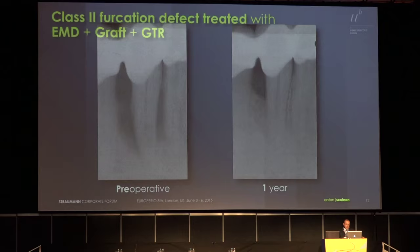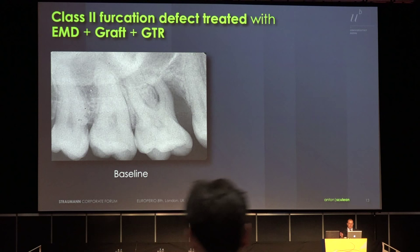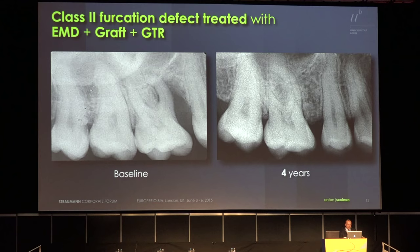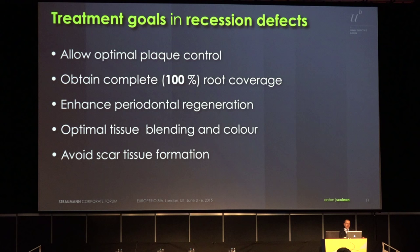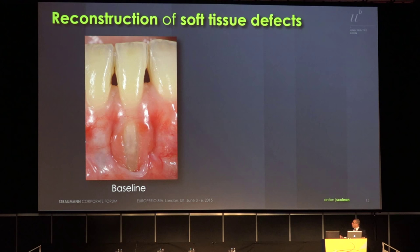What about a class 2 furcation? If we have a case like this one, I would like to have a stable situation at 4 years. What about recession-type defects? We would like to allow our patients to clean this area and obtain complete root coverage — but not only root coverage. We would also like to enhance periodontal regeneration and obtain optimal tissue blending and color, while avoiding scar tissue formation. If the patient presents with this defect, which is quite challenging, I would like to end up with this situation.